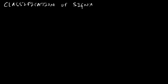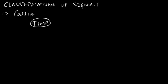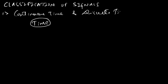In this video we are going to learn the classification of signals. The very first classification is done based on the variable called time, and the signals we get are known as continuous time and discrete time signals.